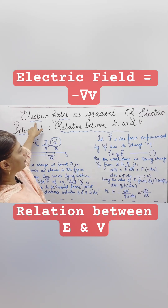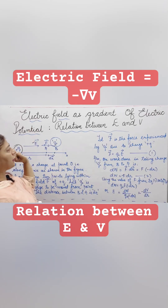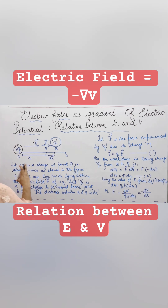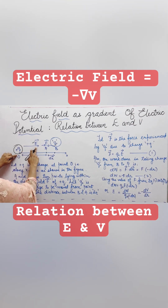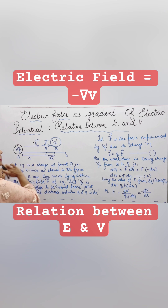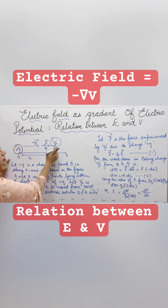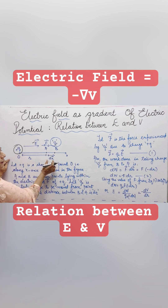Today we are taking the topic of the electric field as a gradient of electric potential, or the relation between the electric field and the potential. A charge +Q is placed at point O along the x-axis, and because of this, electric field E is present. The force experienced by a test charge Q0 is F. B and A are two points along the x-axis, and this test charge Q0 is being taken from point B to A — a small distance denoted by dr.